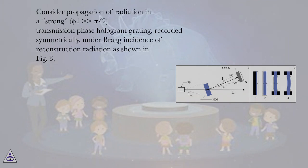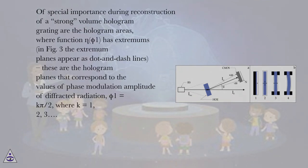Consider propagation of radiation in a strong transmission phase hologram grating, with φ₁ = π/2, recorded symmetrically under Bragg incidence of reconstruction radiation, as shown in figure 3. Of special importance during reconstruction of a strong volume hologram grating are the hologram areas where the function η(φ₁) has extremums.